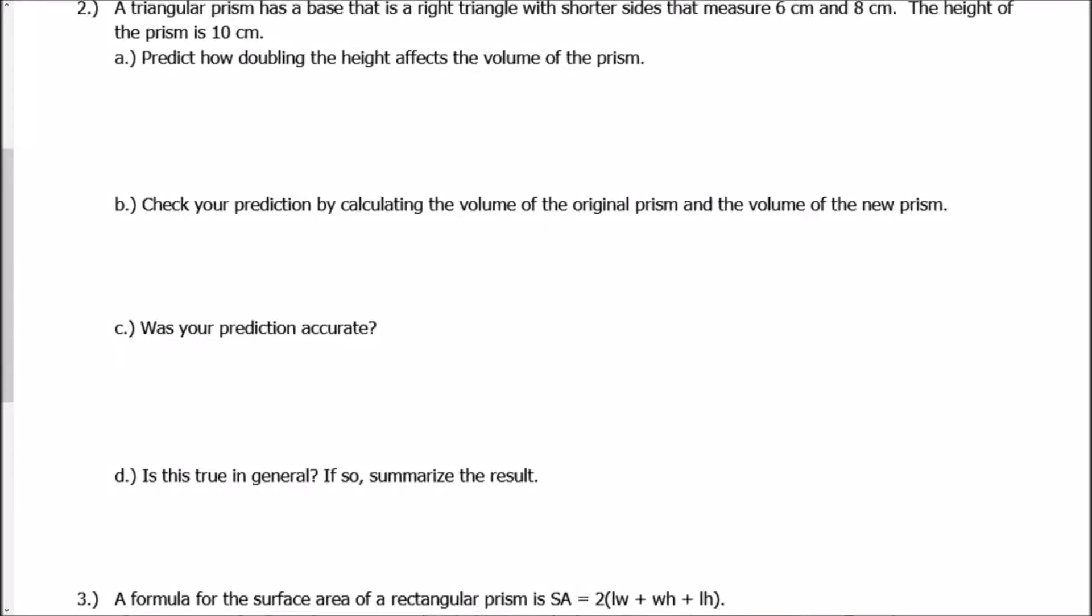All right, in question number two, it says a triangular prism has a base that is a right triangle with shorter sides that measure six centimeters and eight centimeters. The height of the prism is 10 centimeters.